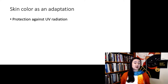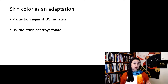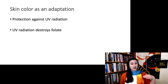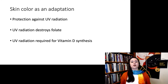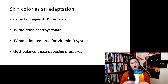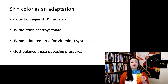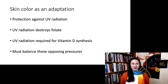So skin color is protection against UV radiation. Remember, UV radiation destroys folate. So if you live in a place with a lot of UV radiation, you need that dark skin to protect you so you don't destroy that folate. But on the other hand, we also need a little bit of UV radiation to synthesize vitamin D. So we have these two opposing pressures, and that's why in different places there's a different optimal balance to find the best of both of these worlds.